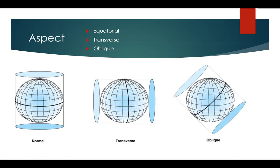Or it can go in any other directions, which is when it's called oblique. This is how your developable surface wraps around the globe.